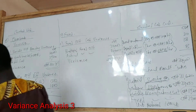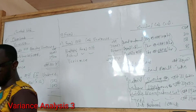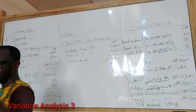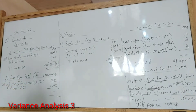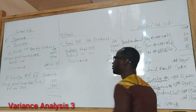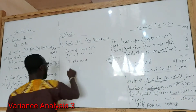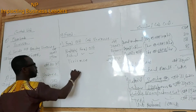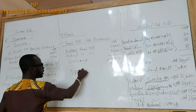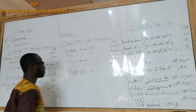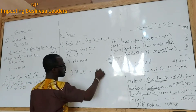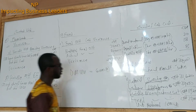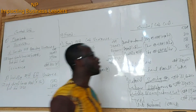That is it about this question. The part ii aspect says give one reason for each of the variances computed in requirement i — in other words, why do you have the answers you have? I hope you can do them. The first one was direct material usage variance. What did we get? What was the answer?